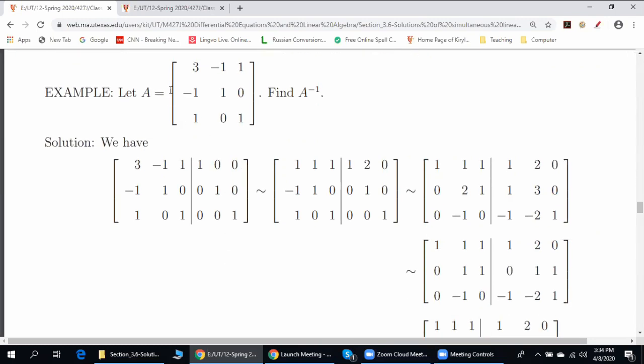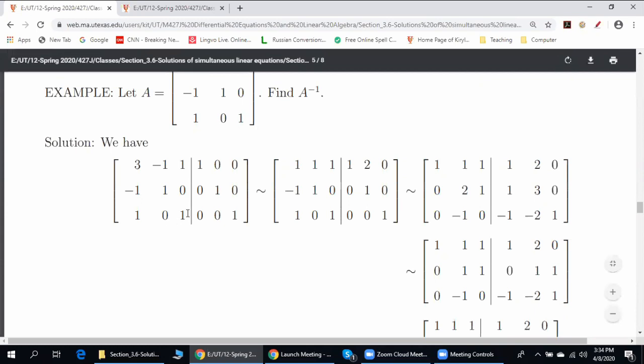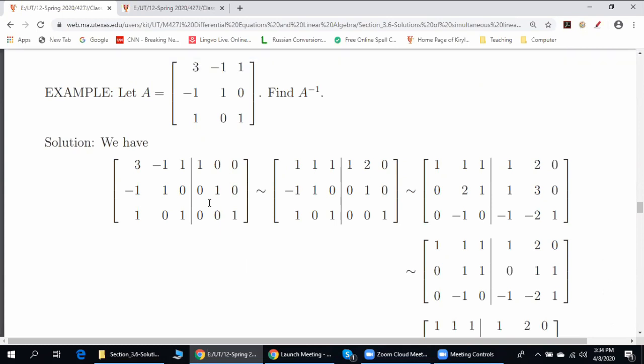For example, here is given matrix A. We put together A and I. We apply elementary row operations in order to obtain I on the left. Here's one way to do it.